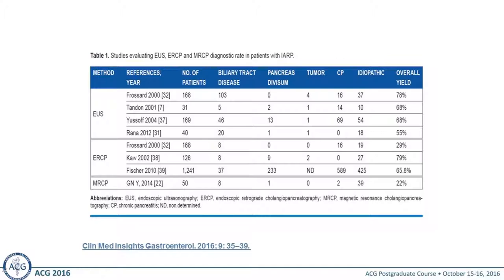This is a recent publication looking at EUS, ERCP, and MRCP — the yield of EUS-based versus ERCP-based strategies. Right now we don't do ERCP-based strategies at all. The recent article from Mel Wilcox is very helpful: with an EUS-based strategy you can follow patients, and if you have one attack of pancreatitis there's about a 27% recurrence rate. Multiple attacks increase the risk of developing chronic pancreatitis.